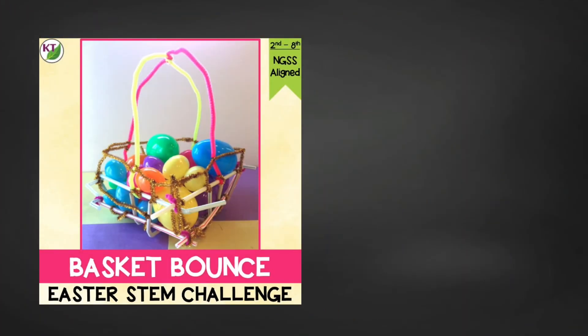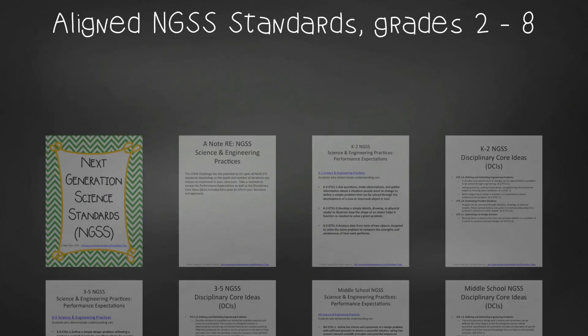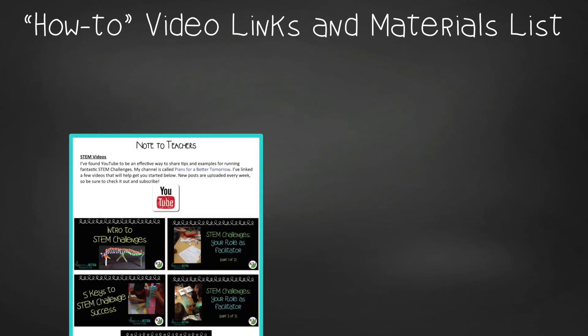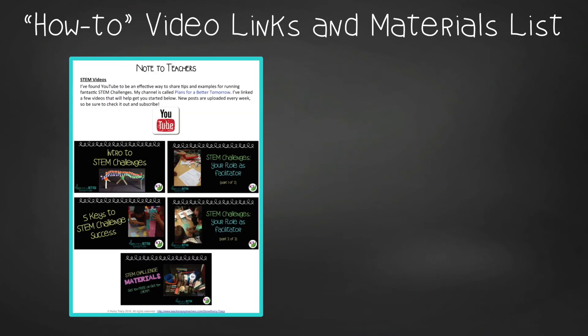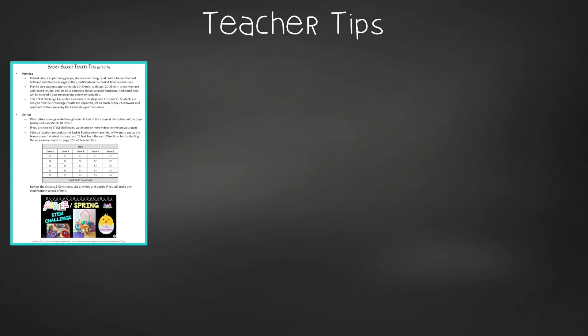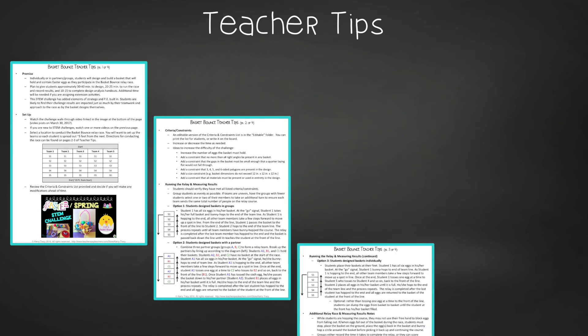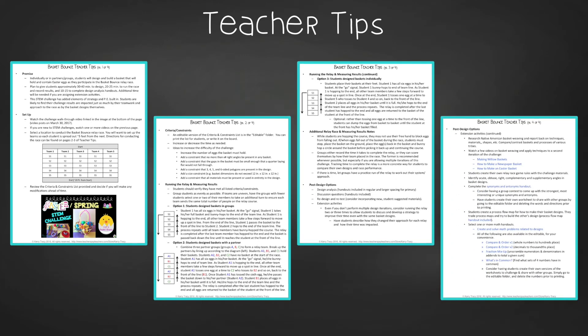You have the basics to do this challenge in your class on your own, but the resource is a basket full of goodies. This time-saving resource contains everything you need, including modifications for second through eighth graders. You'll still need to gather the simple materials, but the rest has been done for you. You'll get aligned Next Gen Science Standards, links to STEM Challenge how-to videos, the Basket Bounce materials list, and in teacher tips: premise and setup, how to increase or decrease difficulty, how to run the relay race, measuring results, and cross-curricular extension suggestions.